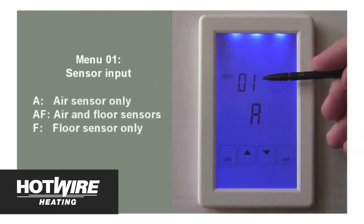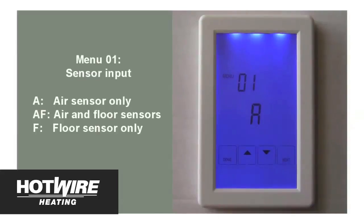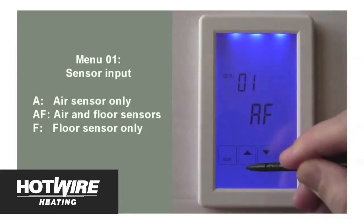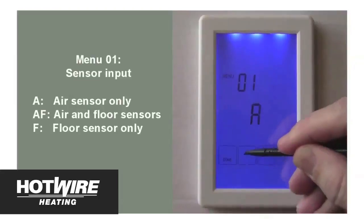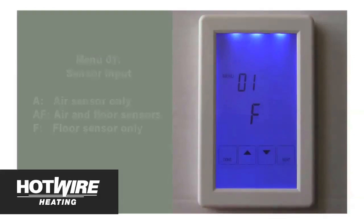Menu 1 and the letter A will show. Menu 1 allows you to choose which sensor the unit will use to determine the floor temperature. You can use the up or down arrows to select between A, where the unit will use its built-in air temperature sensor; A, where the unit will use its air temperature sensor and the floor temperature sensor together; or F, to just use the floor temperature sensor installed inside your heated floor. In this case, select F and press next to move to the next menu.